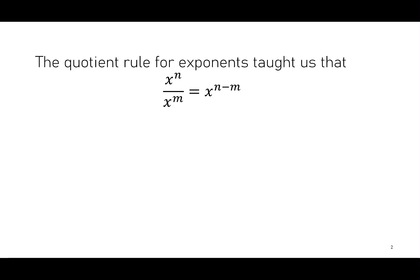What we want to talk about today is what do we do in the case where the exponents are equal. For example, what if I had x to the 6 over x to the 6? The quotient rule tells us we should subtract 6 minus 6.